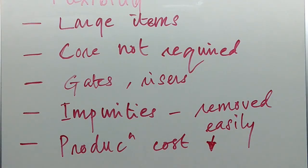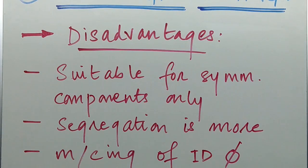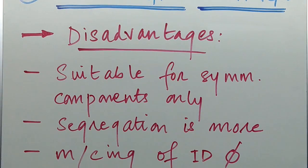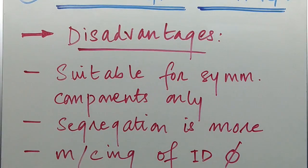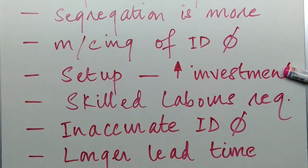Now for the disadvantages: in true centrifugal casting, we can only produce symmetrical jobs — asymmetrical jobs cannot be produced. Segregation of alloying components is more pronounced in this process, as centrifugal force separates components by density. Machining of the internal diameter is required to remove impurities settled at the center. The process also requires very high initial investment as the setup is costly.